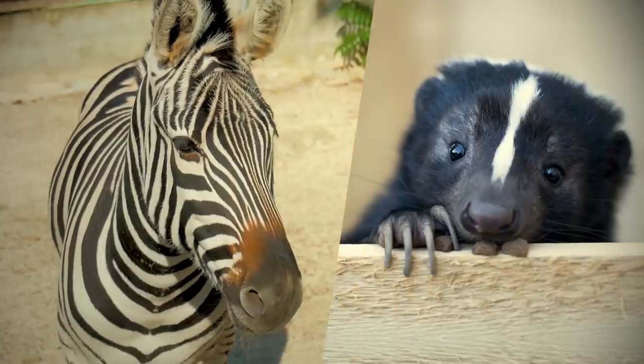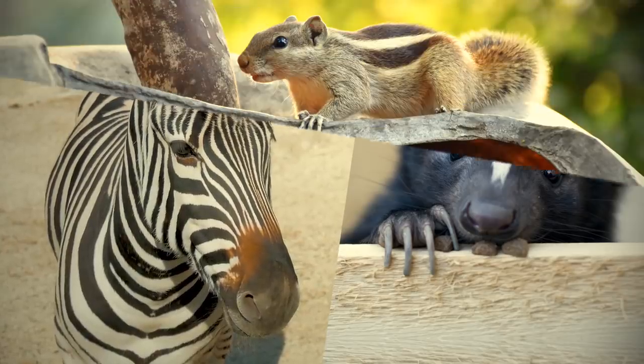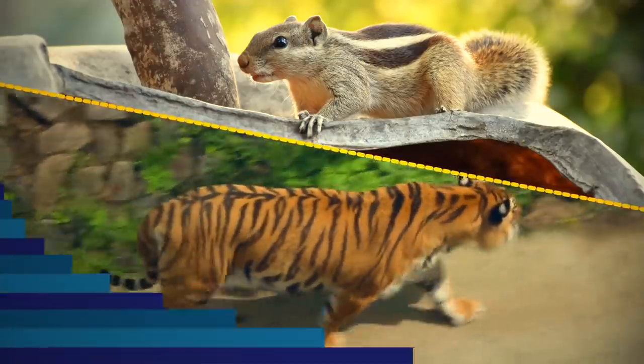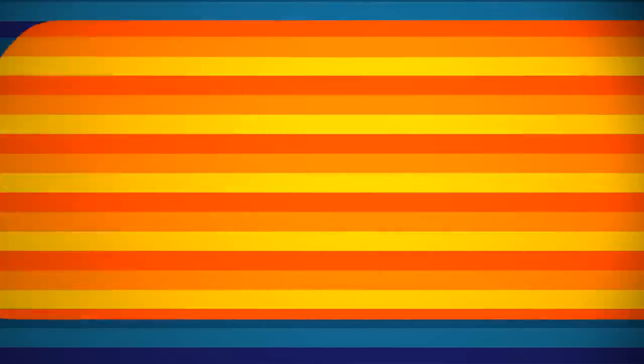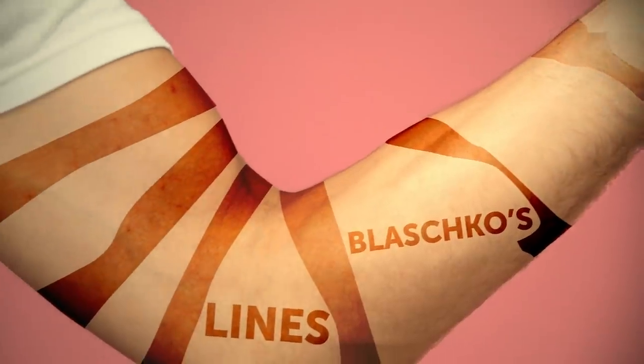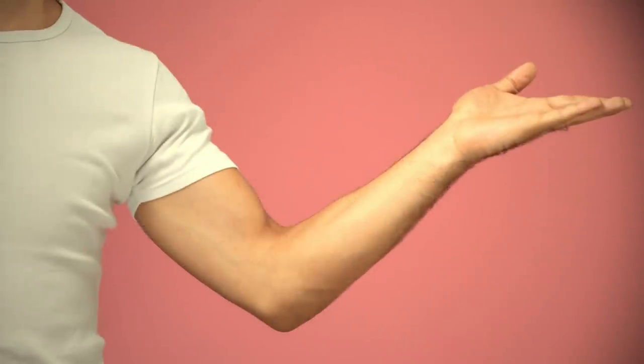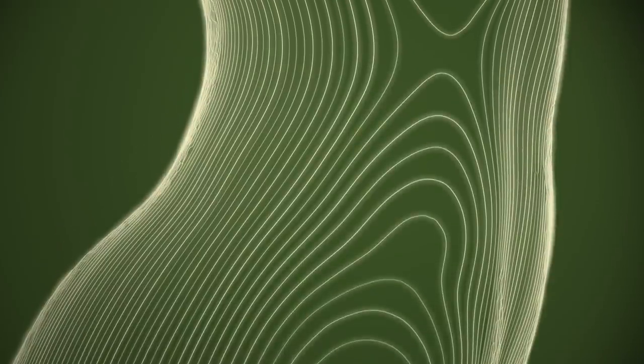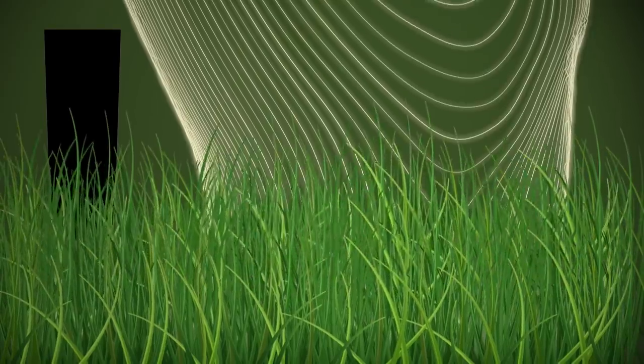Yipes, stripes. Zebras, skunks, squirrels, and tigers aren't the only animals with stripes. So are you. Dermatologists call our stripes Blaschko's lines. No, Blaschko doesn't own them, they're all yours. These stripes are invisible to the naked eye, but they cover your entire body. Don't try to use them to blend into the grass, it won't work.